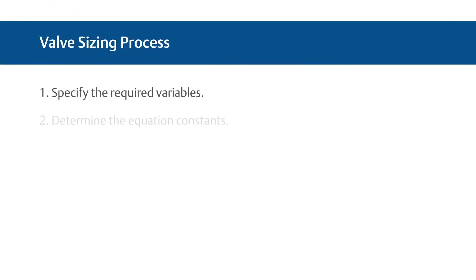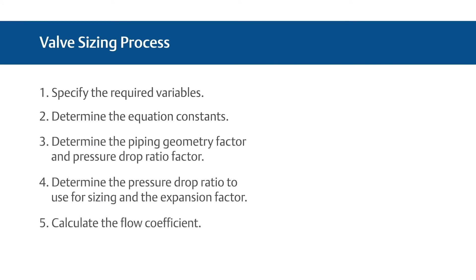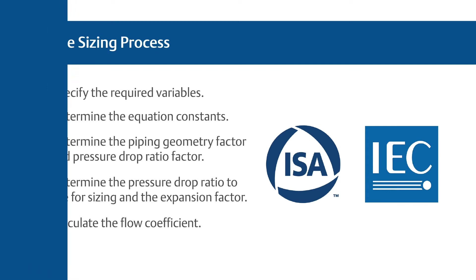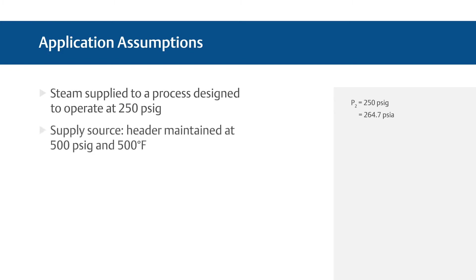In this video, we'll go through a step-by-step process for sizing control valves for compressible fluid using the ISA and IEC's recommended procedure. For this example, we'll assume superheated steam is to be supplied to a process designed to operate at 250 PSIG or 17.2 bar. The supply source is a header maintained at 500 PSIG or 34.5 bar and 500 degrees Fahrenheit or 260 degrees Celsius.